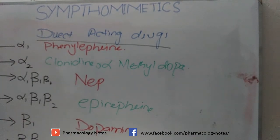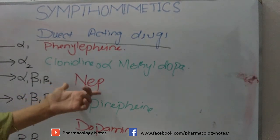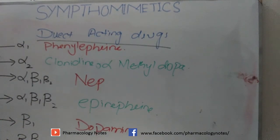These are the sympathomimetic drugs which act directly on the receptors. We will study first about norepinephrine, but in the next lecture. Thanks for watching the video. Keep watching the videos and don't forget to subscribe to our channel.